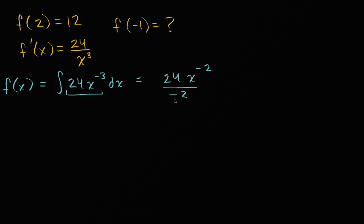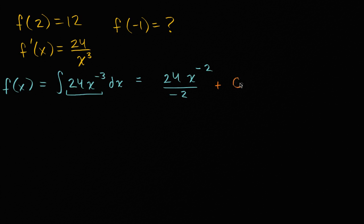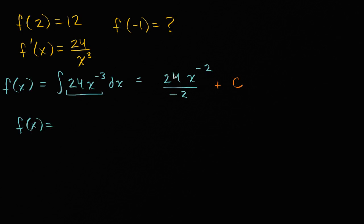Is this f of x? Well, f of x might involve a constant, so let's put a constant out here. Notice: if you take the derivative of 24x to the negative two over negative two, we already established that gives 24x to the negative three. But the derivative of a constant disappears, so we have to account for it. So f of x is negative 12x to the negative two plus some constant C.